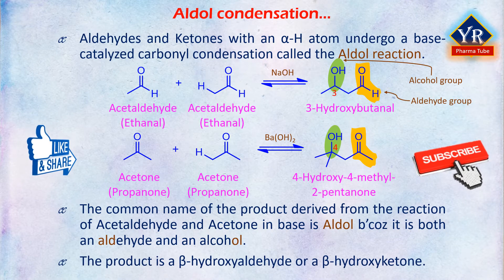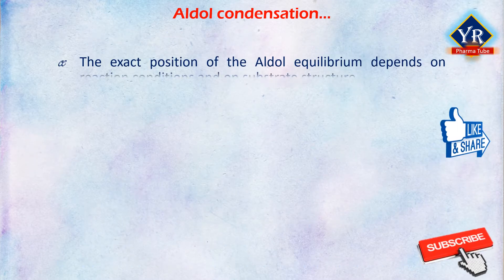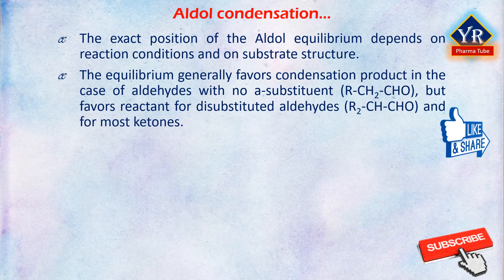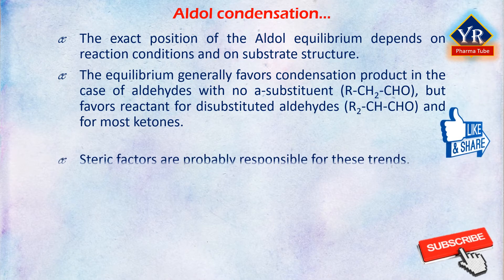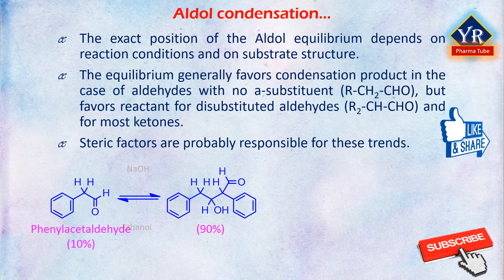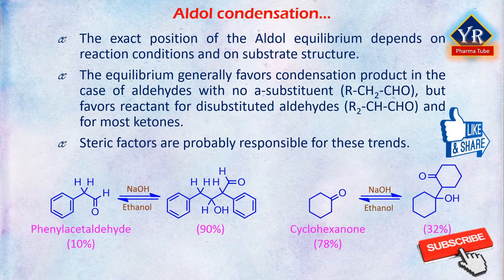The product of an aldol reaction is a beta-hydroxyaldehyde or beta-hydroxyketone. The exact position of the aldol equilibrium depends both on reaction conditions and on substrate structure. The equilibrium generally favors the condensation product in the case of aldehydes with no alpha substituent (RCH₂CHO), but favors the reactant for disubstituted aldehydes (R₂CHCHO) and for most ketones. Steric factors are probably responsible for these trends, since increased substitution near the reaction site increases steric congestion in the aldol product.